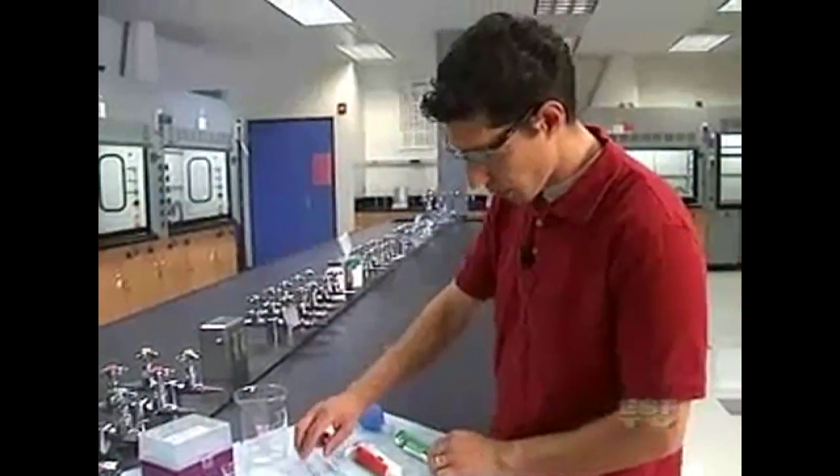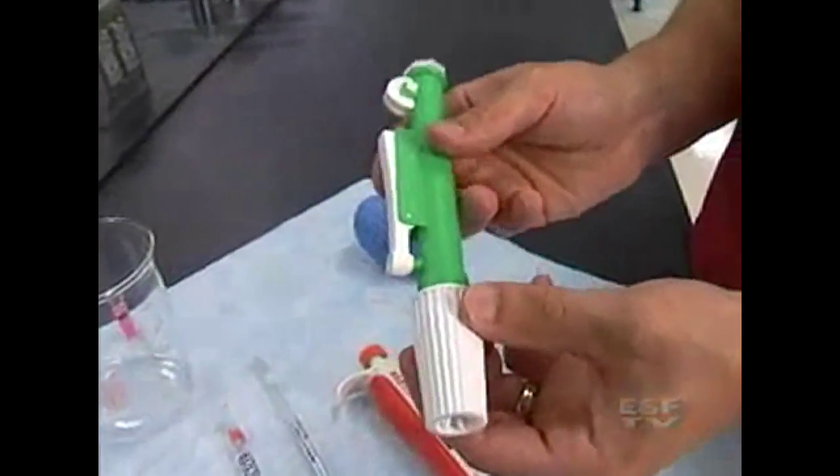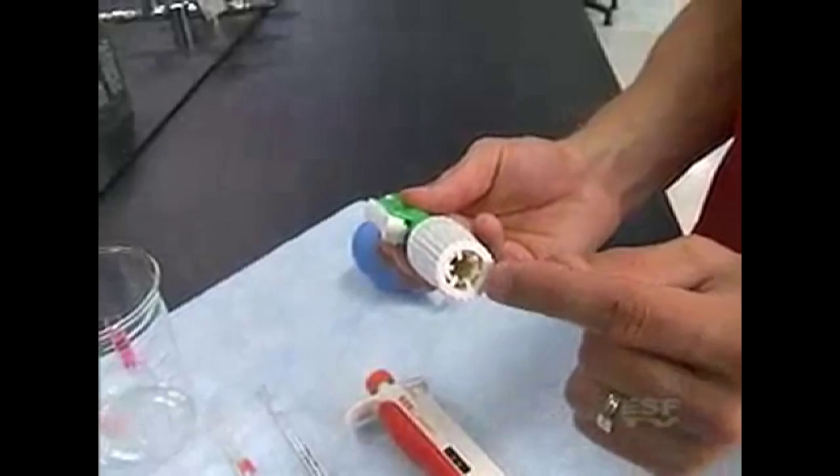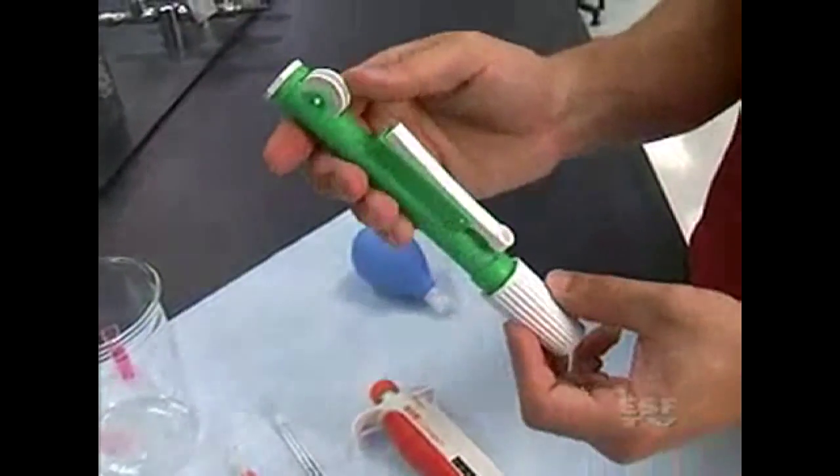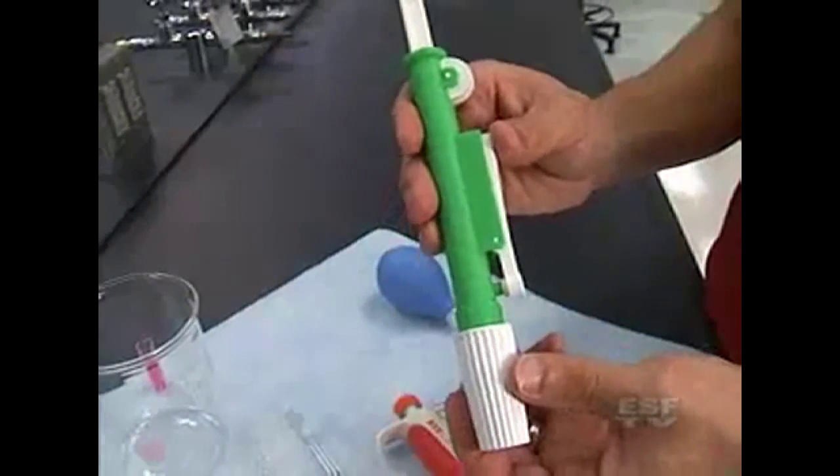To withdraw the solution we use a pipette pump. The pipette pump has a few different parts on it. It has the hole where you put the pipette, it has a wheel which you use to withdraw the solution and then it has a lever on the side for draining and this uses gravity to drain the solution.